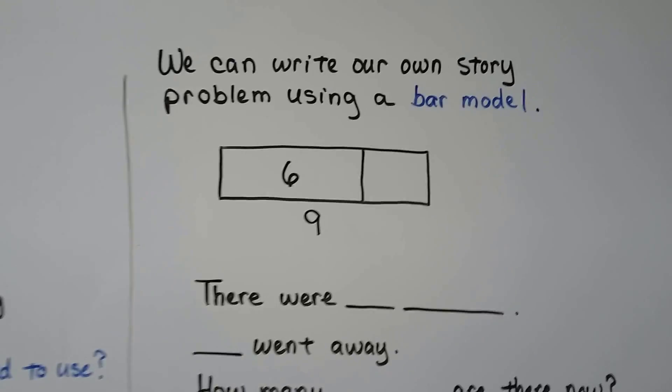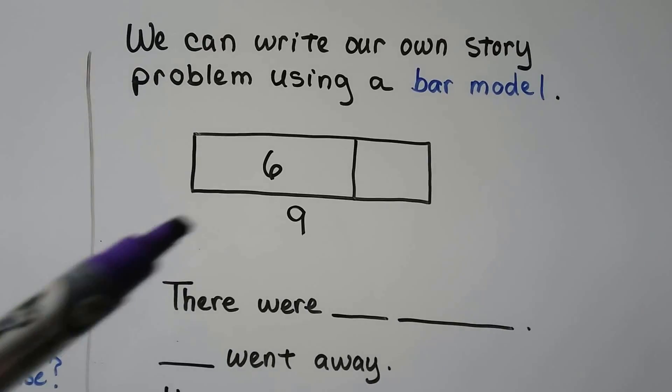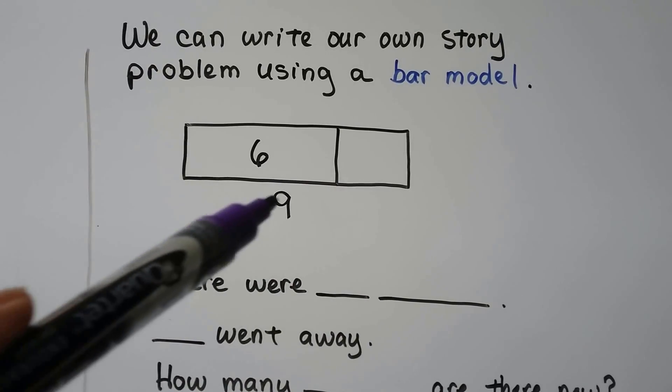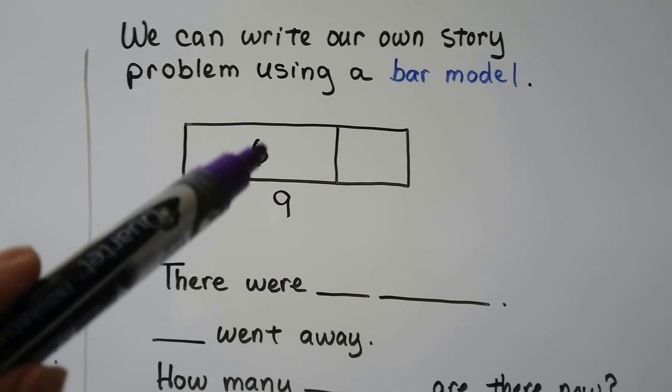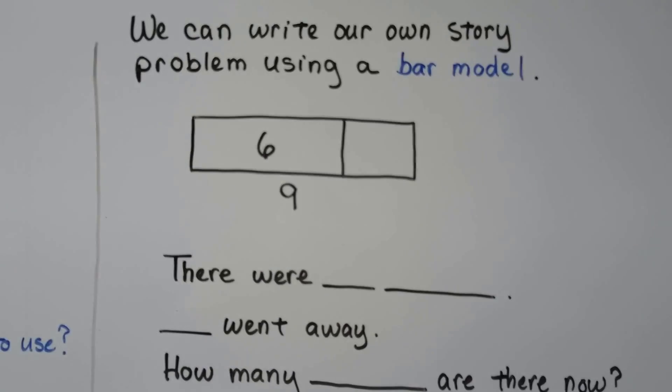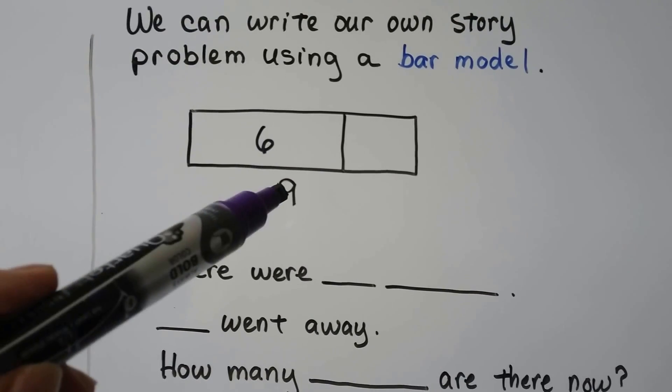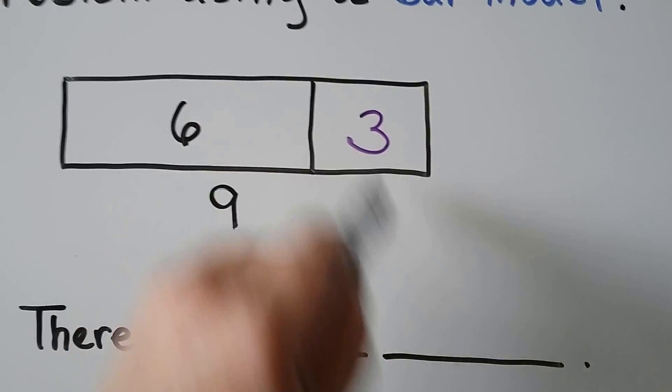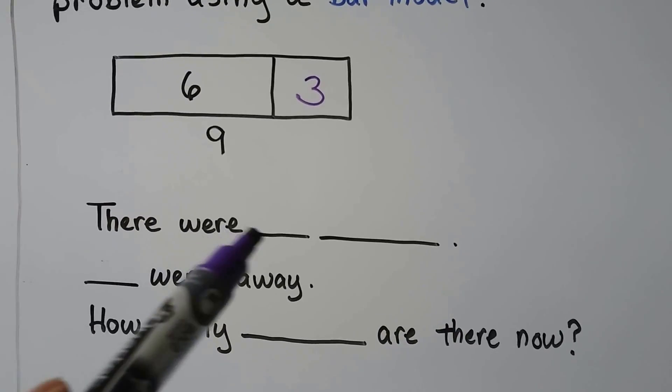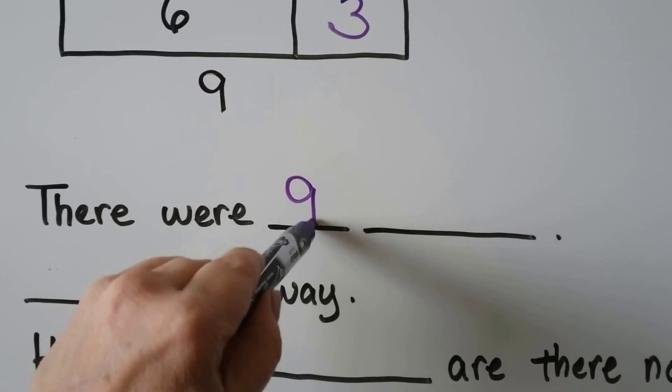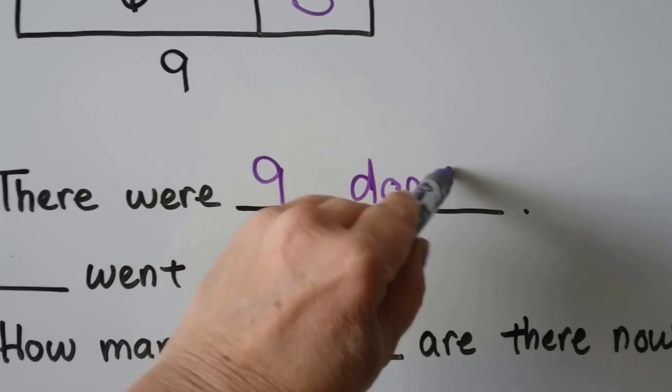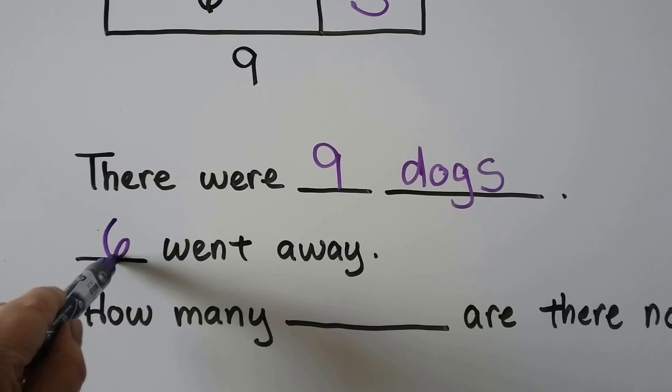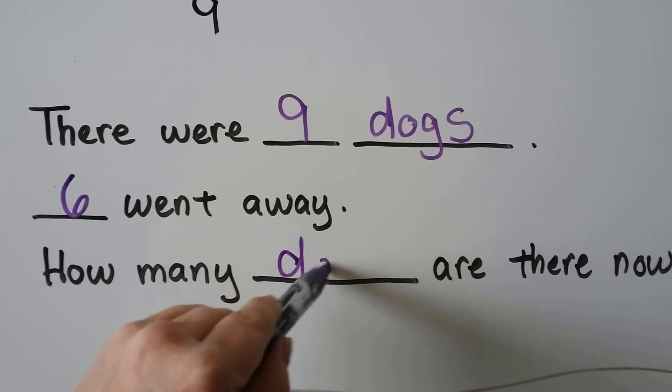We can write our own story problem using a bar model. If we have a bar model that has some numbers in it, we can make our own story problem. If there's nine in all and there's a six here, we can finish the bar model and write our own story. What number plus six would make a nine? Six plus three would make a nine. There were nine. We can say dogs. Six went away. How many dogs are there now?